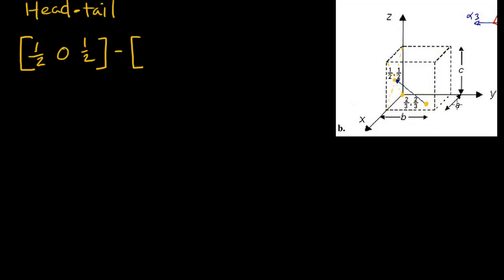The tail is in the xy plane, so we have 2 thirds, 2 thirds, and 0.